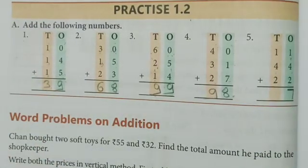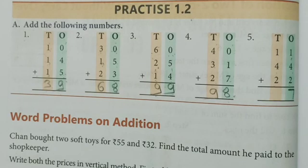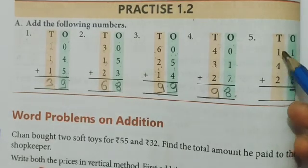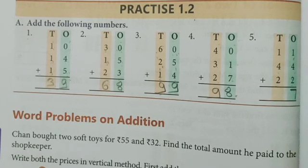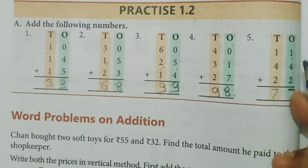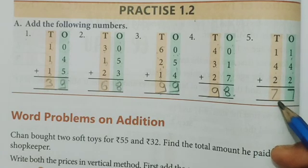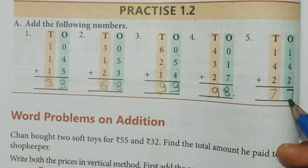First say me 1 plus 4, 5. 5 plus 2, 7. That means 11 plus 44 plus 22, answer is 77.